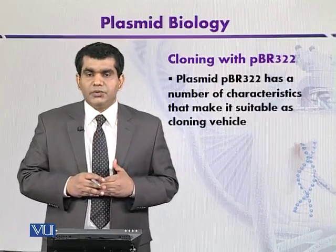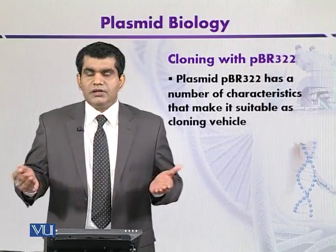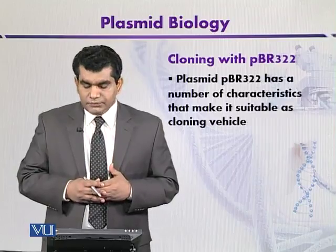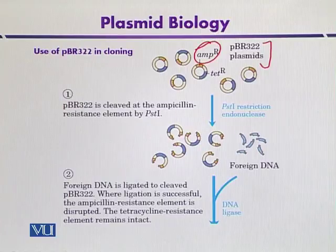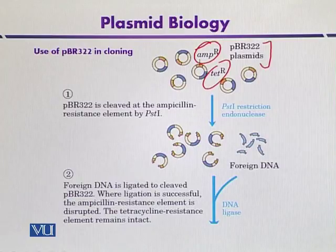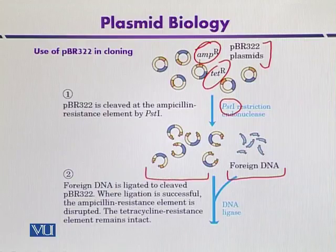After transformation, the recombinants can be screened on the basis of ampicillin resistance. This diagram indicates the use of PBR322 in cloning. Here we have a number of PBR322 plasmids containing an ampicillin resistance gene and a tetracycline resistance gene. Suppose we cut or digest this plasmid and the foreign DNA with restriction enzyme PST1. This PST1 site is present within the ampicillin resistance gene, so both the foreign DNA and the plasmid DNA have been digested.